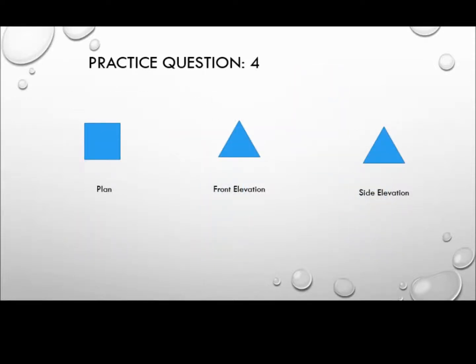Let's try this one. When we're looking straight down from the top it looks like a square, but from both the front and the side it looks like a triangle. What three-dimensional object are we looking at?